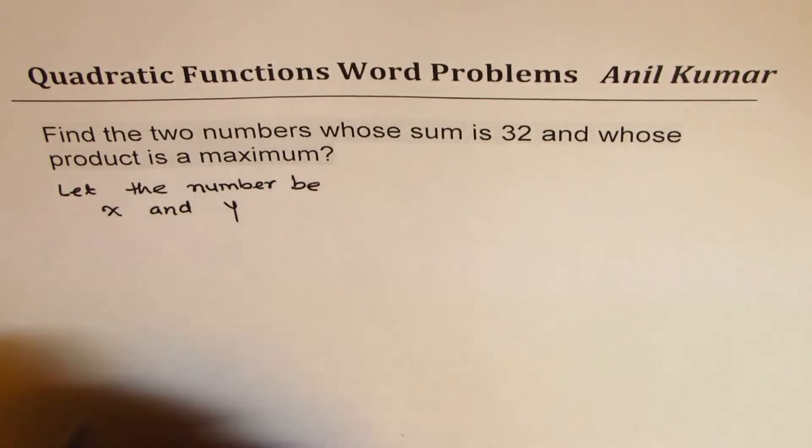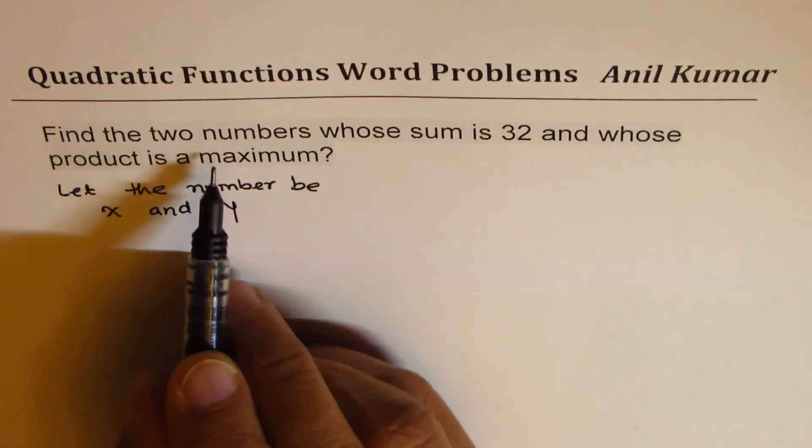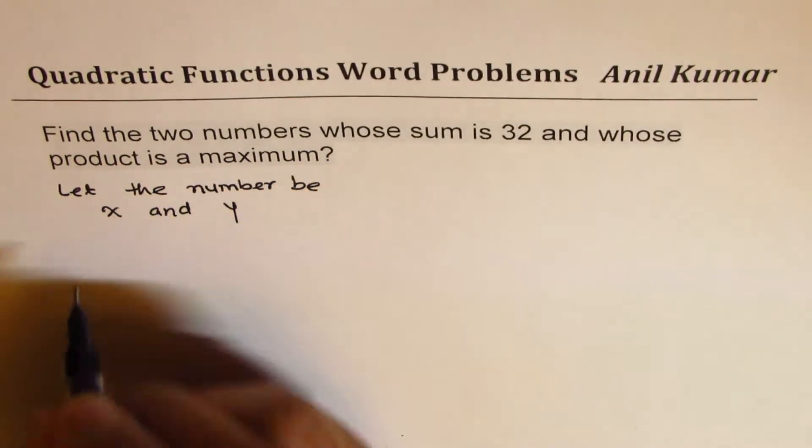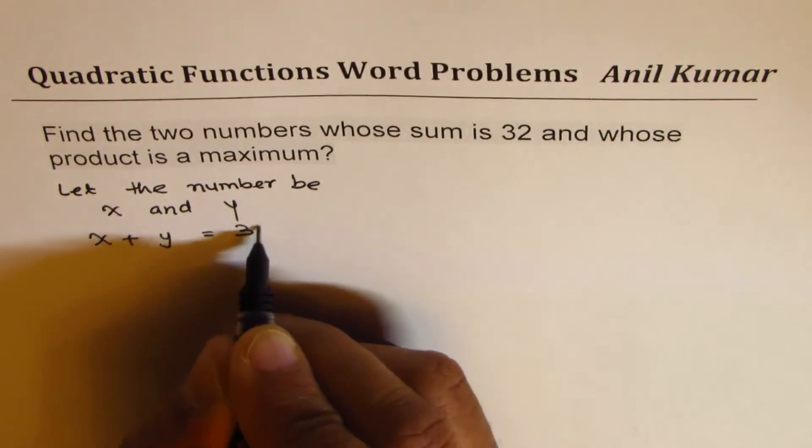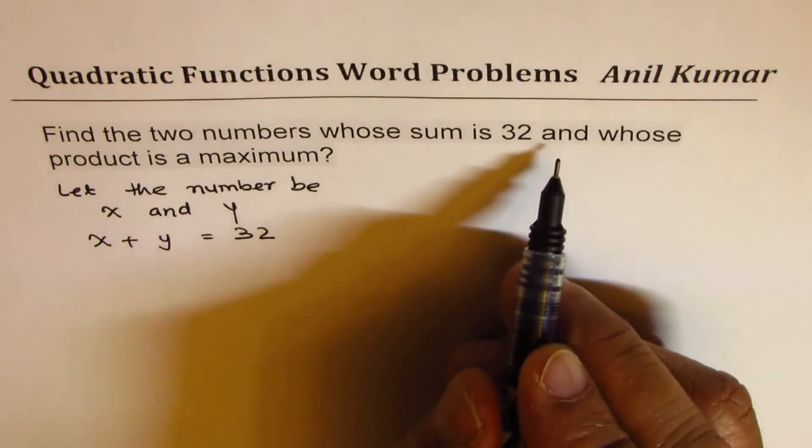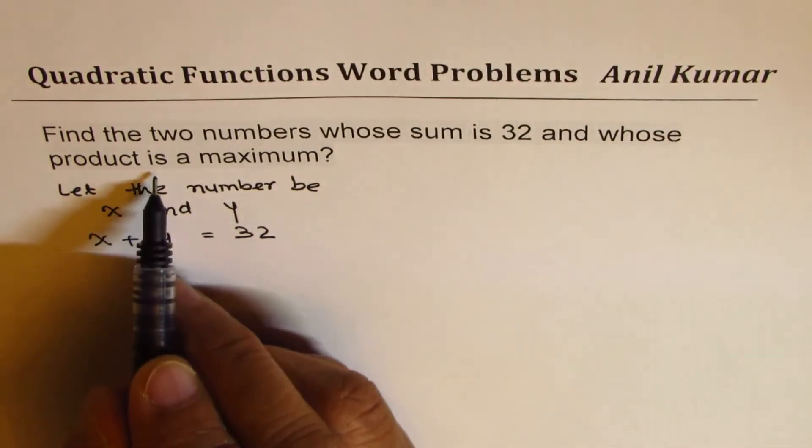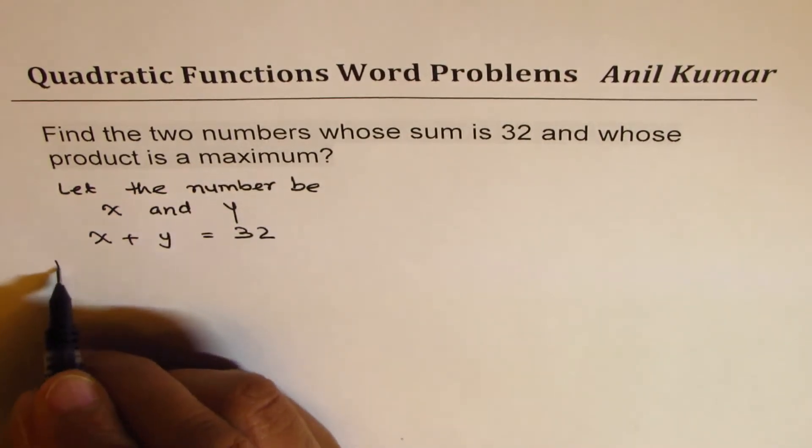This is find the two numbers whose sum is 32, so x plus y equals to 32, and whose product is a maximum. So let P be the product of x and y.